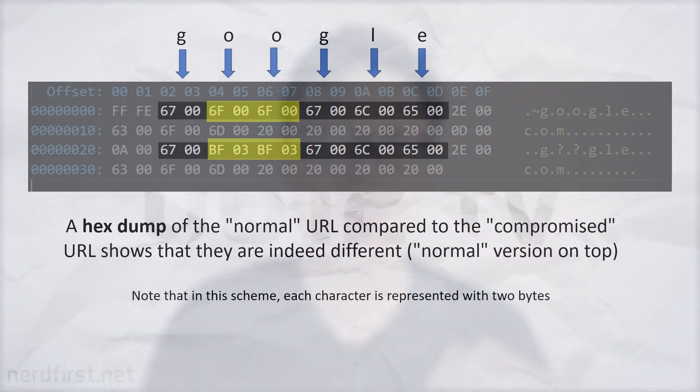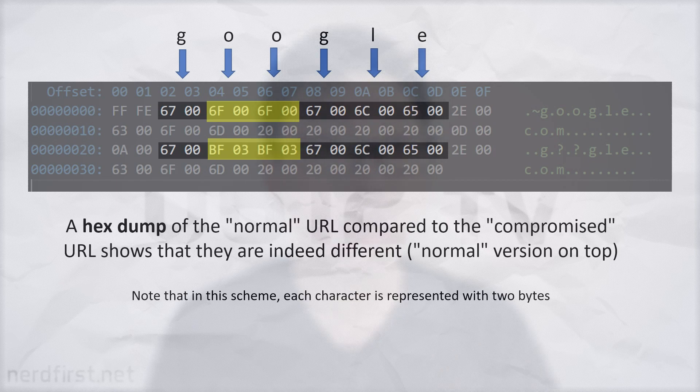One example of this would be this URL. It looks exactly like google.com, but the two O's have actually been replaced with a different character from the Unicode set. Instead of being O's, these are actually Greek Omicron characters — so it's a completely different character.